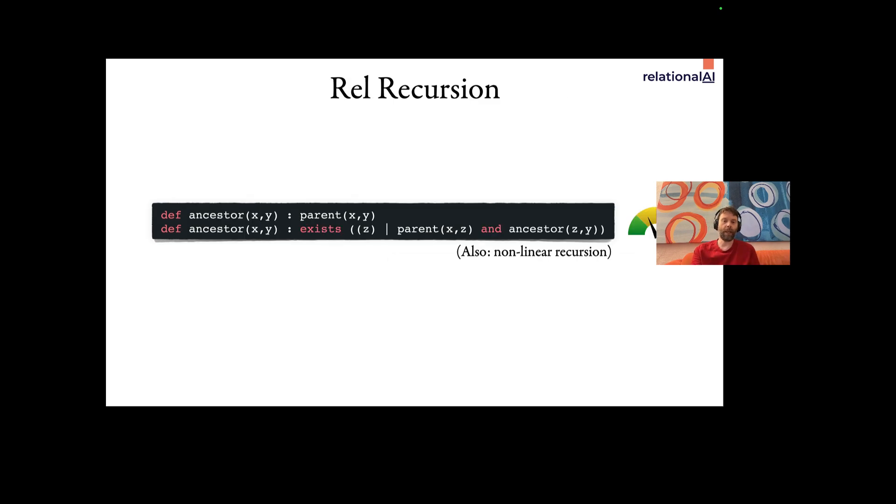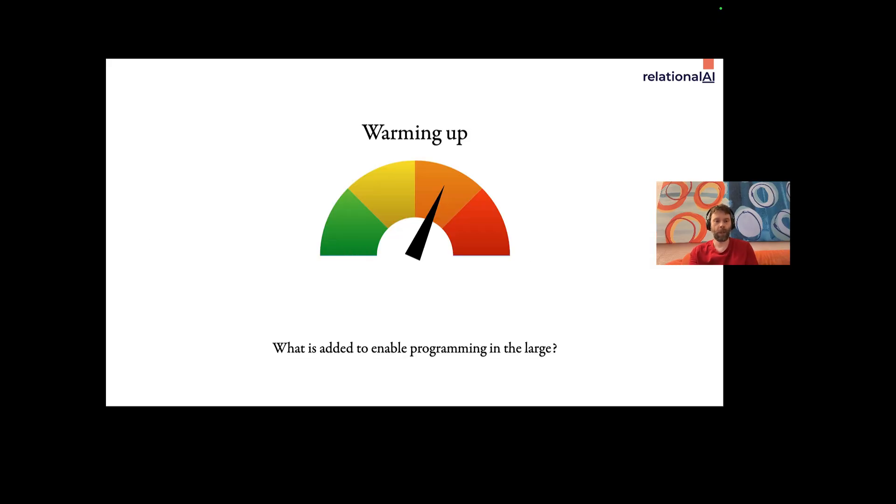And since rel is based on Datalog, you can use Datalog style recursion, defining ancestor using parent like this. All right, so until now, we are squarely in the database query language world, right? How do we go beyond this?